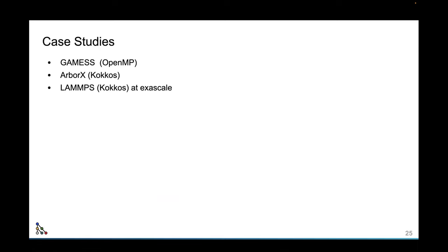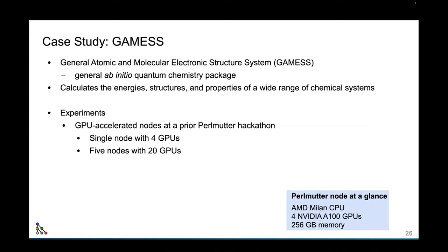Now let's look at some case studies. I'm going to show what HPC Toolkit is capable of for GPU accelerated programs, using GAMESS — an ab initio quantum chemistry package — as an OpenMP example just to show off the GPU analysis capabilities. We collected data from a former Perlmutter hackathon, on a single node using four GPUs and then five nodes using 20 GPUs. LAMPS, a Kokkos application, was also measured on Frontier on 64K MPI ranks and GPU tiles.